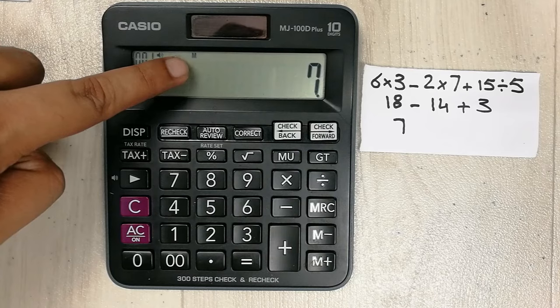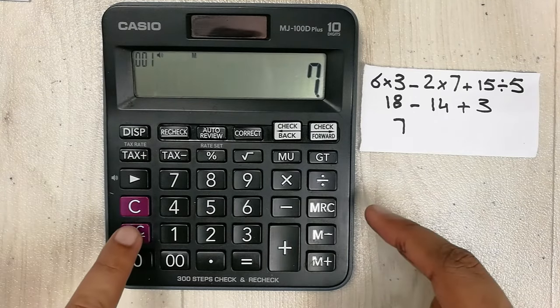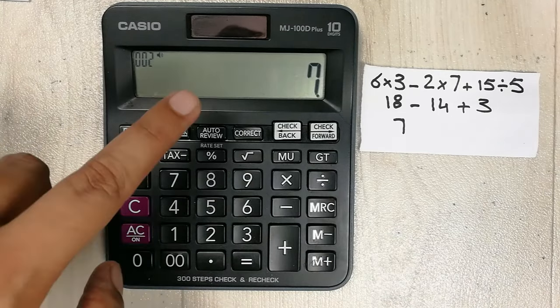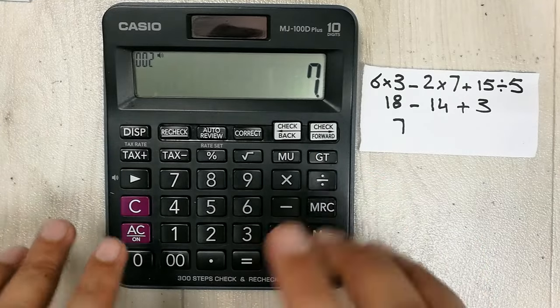To remove it you have to press this MRC button two times. Press 1, 2. So now you can see the M sign is removed, so there is no more memory in your calculator.